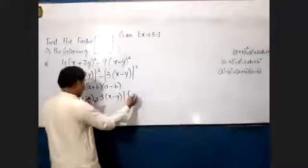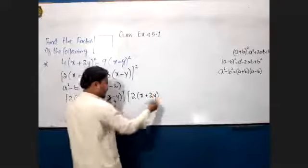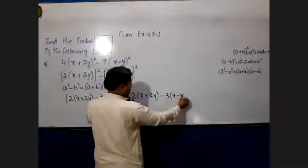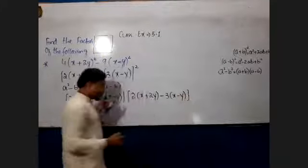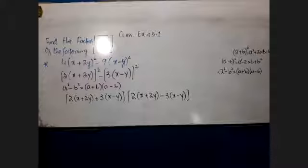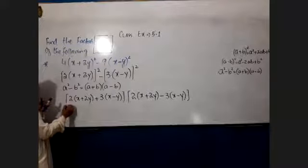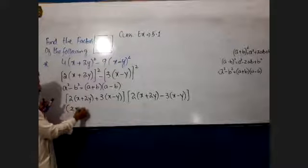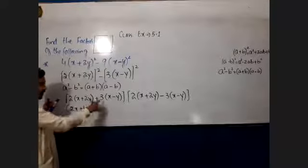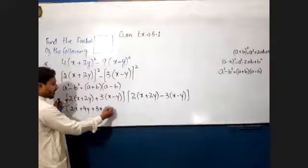Similarly, 2x+2y minus (3x-y) becomes a-b. Now we can multiply: 2 multiplied gives 2x and 4y. Then multiply 3 by x: 3x and 3y.